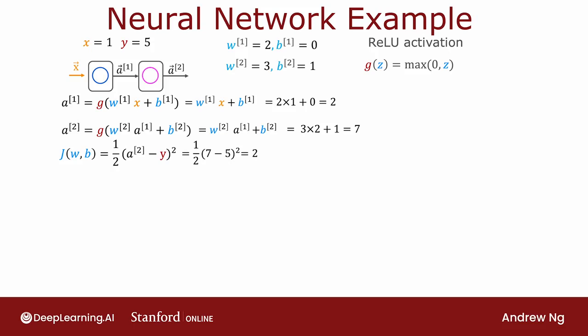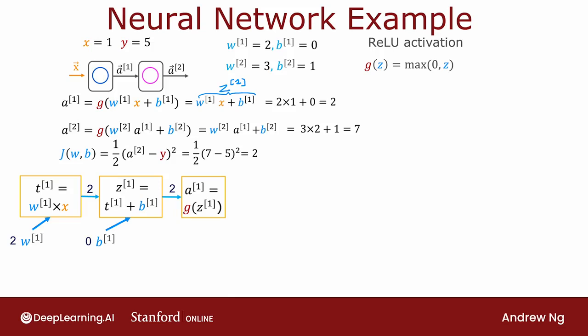So let's take this calculation that we just did and write it down in the form of a computation graph. To carry out the computation step by step, first thing we'll need to do is take w1 and multiply that by x. So we'll have w1 that feeds into a computation node that computes w1 times x, and I'm going to call this a temporary variable t1. Next, we compute z1, which is this term here, which is t1 plus b1. So we also have this input b1 over here. And finally, a1 equals g of z1. We apply the activation function, and so we end up with, again, this value here, 2.